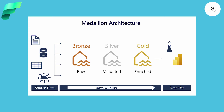This Medallion architecture that you see on your screen is a recommended data design pattern used to organize data in a Lakehouse logically, and we do this to improve data quality as it goes through different layers. The architecture typically has three layers — bronze, silver, and gold — but you can also customize it in case you have a staging environment or some other layer you want to introduce.